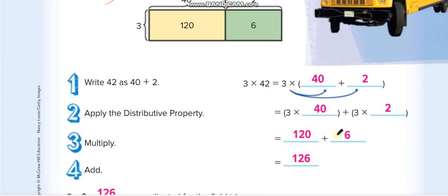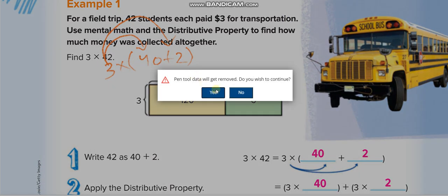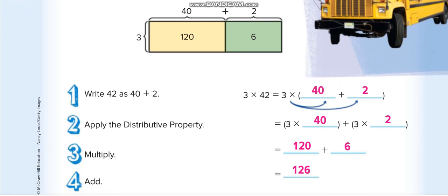So what we do is we break our numbers into two parts, the big one, and multiply it. Like here, 42 we break into 40 and 2, then we multiply and add our answers. We multiply 3 with 40, which is 120, then 3 by 2 equals 6. 120 plus 6 equals 126.